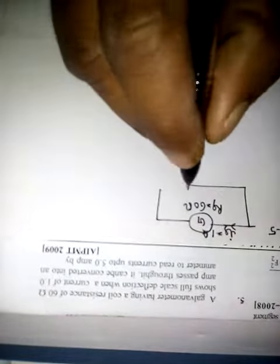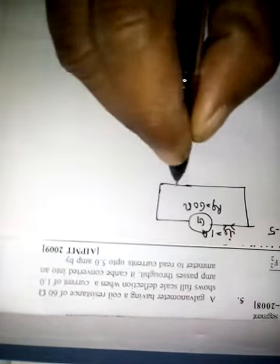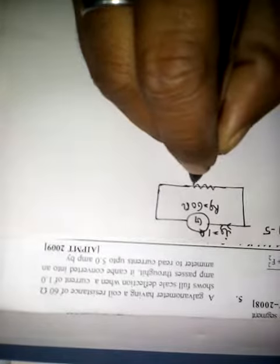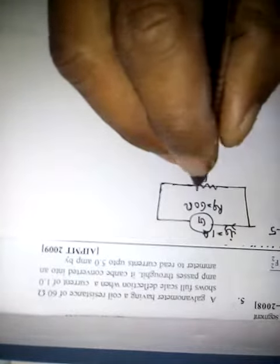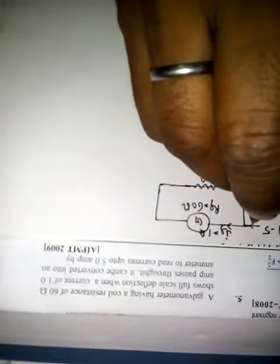It can be converted into an ammeter to measure up to 5 ampere. To convert it to an ammeter, we need a shunt resistance which is connected parallel to the galvanometer. The total current is 5 ampere.